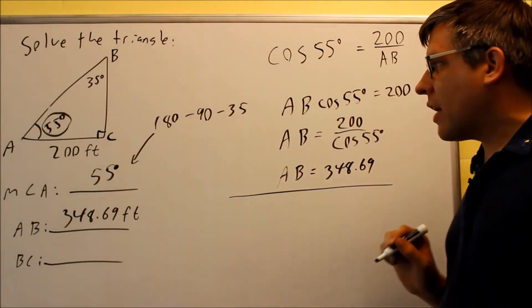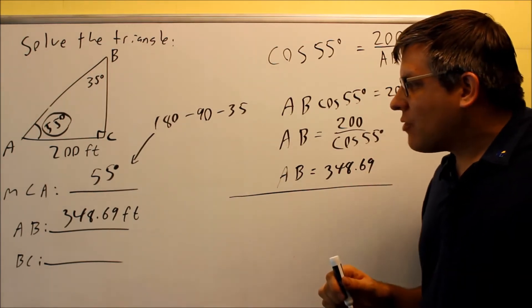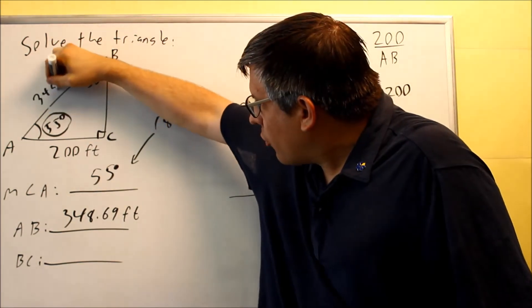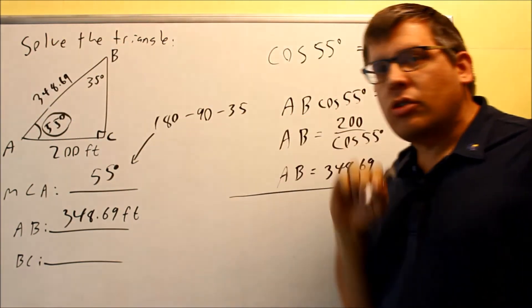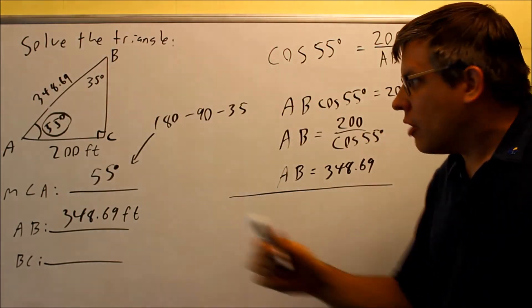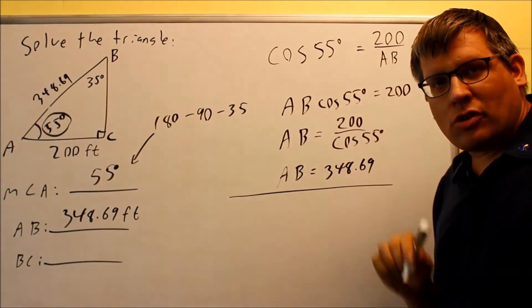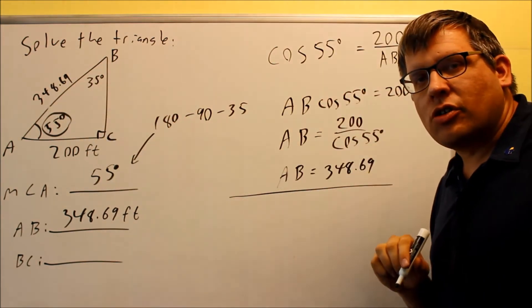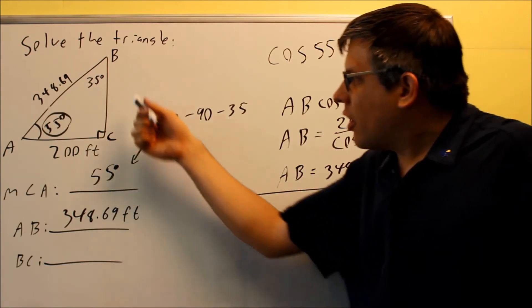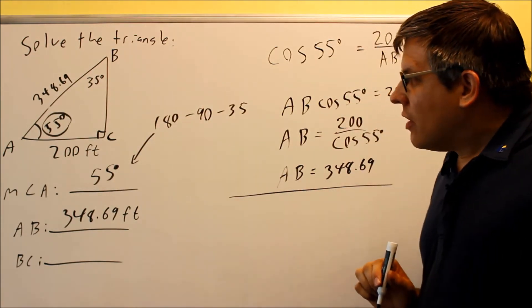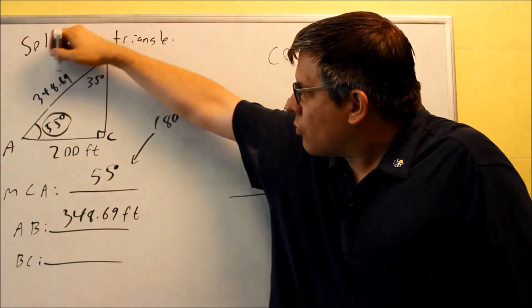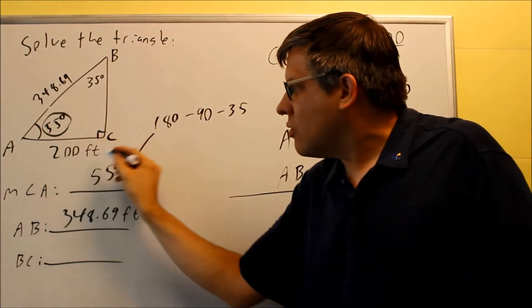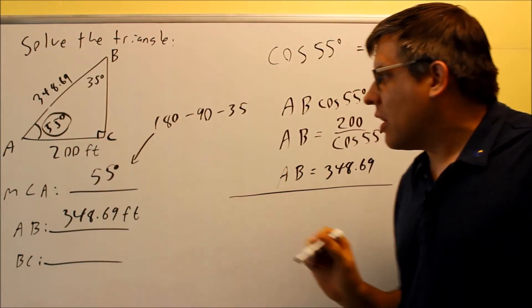Next, to find BC, I have two options. Since I have this side now, which is 348.69, I could use Pythagorean theorem with this one and that one, but that might actually be more work than necessary because we're squaring a decimal. Instead, I'm going to use another trig function to solve that. I'm going to go back and use the original one that I had since I know that's going to be correct.